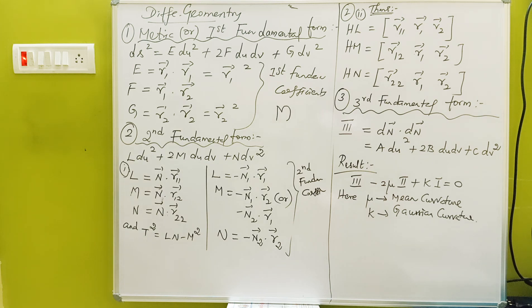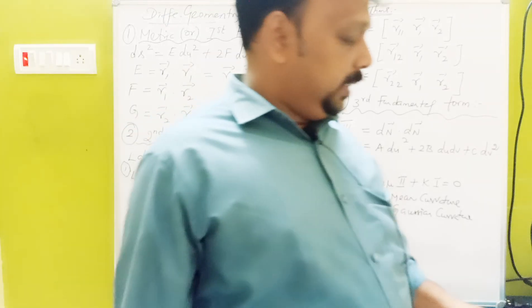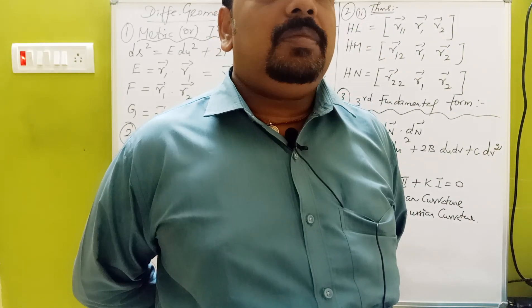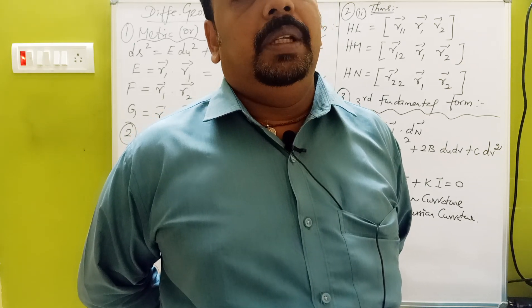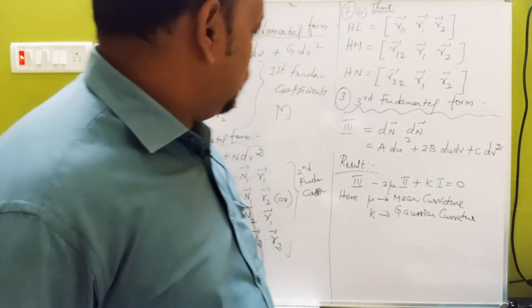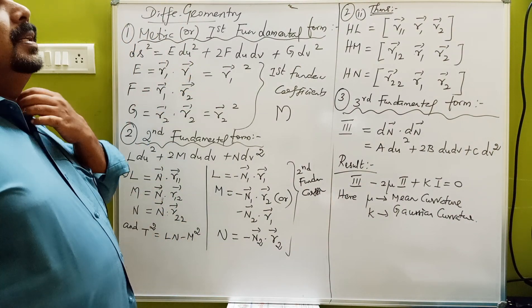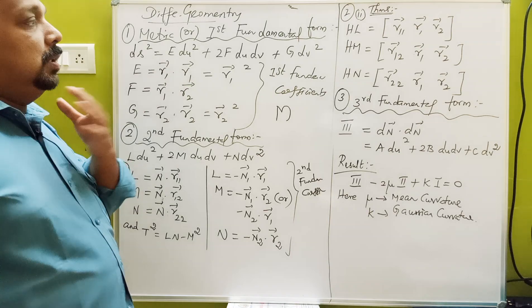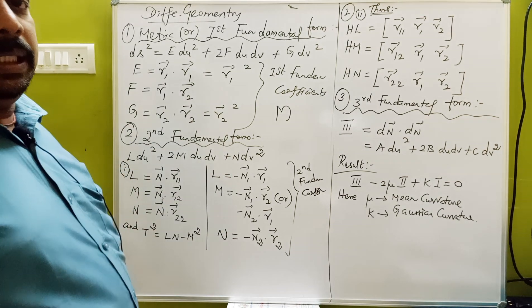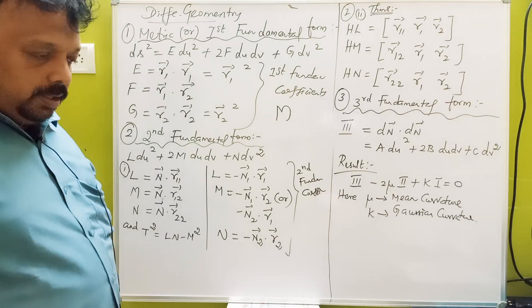So now let's see: the first fundamental theorem is EFG, the second fundamental theorem is LMN, and the third is ABC. First fundamental theorem is EFG. R2, G, R2.